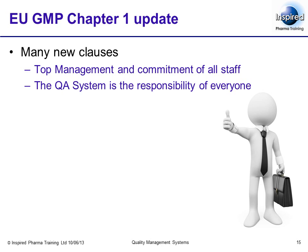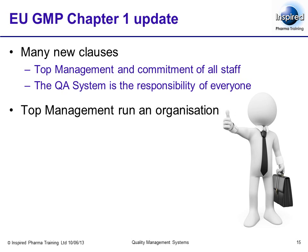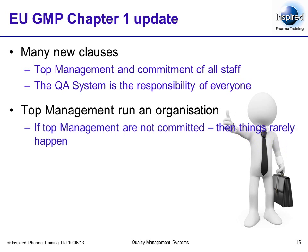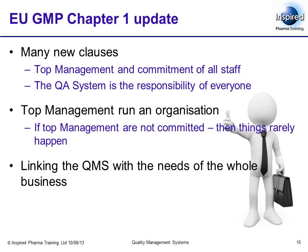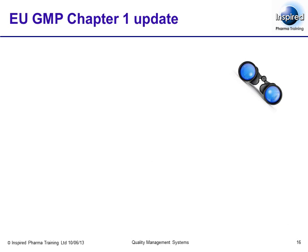GMP is now formally stating for the first time that quality and the QA system is the responsibility of everyone and not just the QA manager or QA department. This is important for two reasons. Firstly, staff at all levels need an understanding of the importance of quality and the quality system. Secondly, top management run an organisation — they determine priorities, clarify what work needs to be done, and provide the resources — human, equipment and financial — to make things happen. If top management are not committed then things rarely happen. This inclusion of top management in more detail in Chapter 1 of GMP shows a formal evolution in pharmaceutical quality management thinking. The clauses of relevance are 1.2, 1.3, 1.5, 1.6 and 1.7.